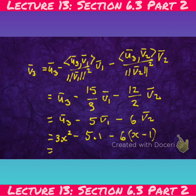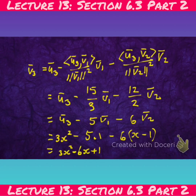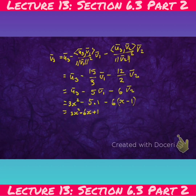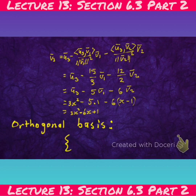Throwing all that together, V3 simplifies to the polynomial we worked out. So the orthogonal basis is {V1, V2, V3} = {1, x-1, V3}, where V3 is that computed polynomial, forming an orthogonal basis for P2 relative to the given inner product.